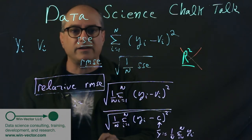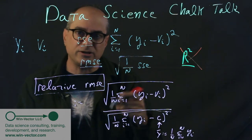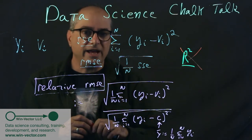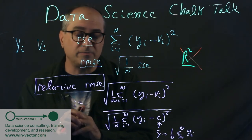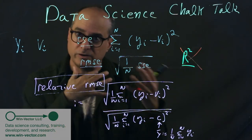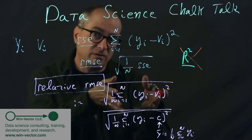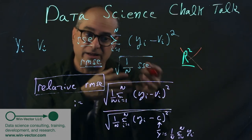Anyway, so that's just my mini data science chalk talk on evaluating regression or number predicting models. And I'm thinking I'm going to start using the relative RMSE more and more. And it's basically, it has an interpretation. Zero is perfection. One is you're leaving as much error on the table as just using the mean.